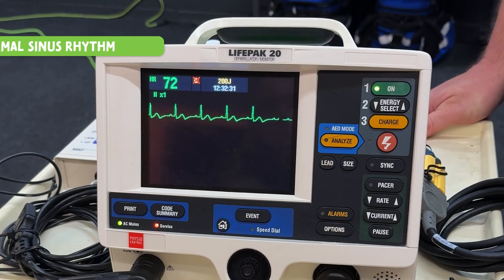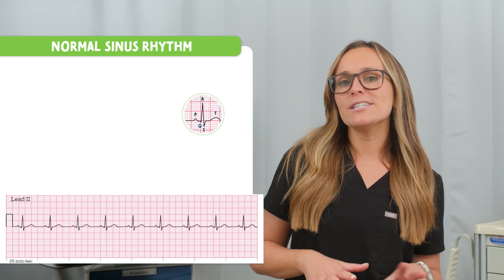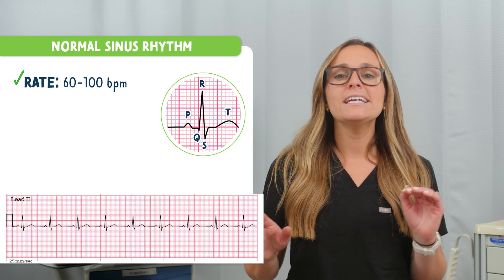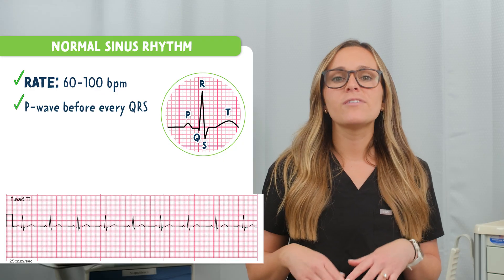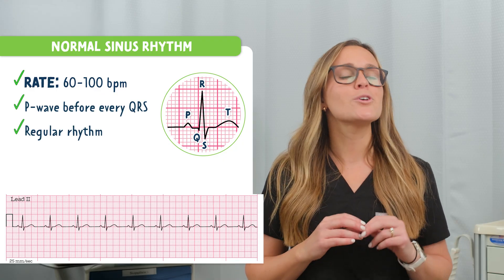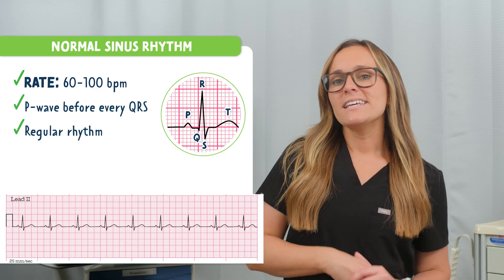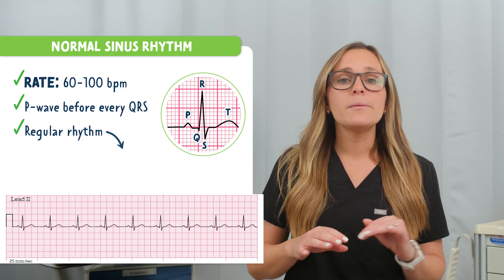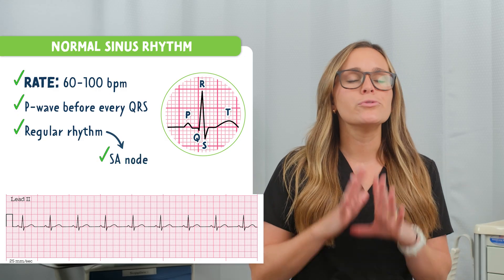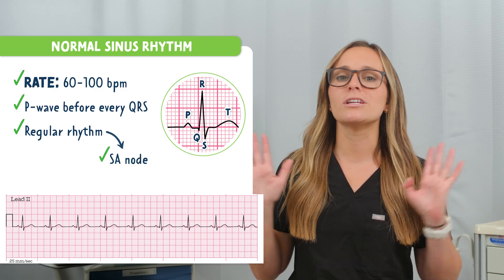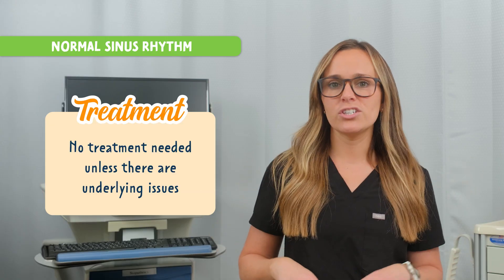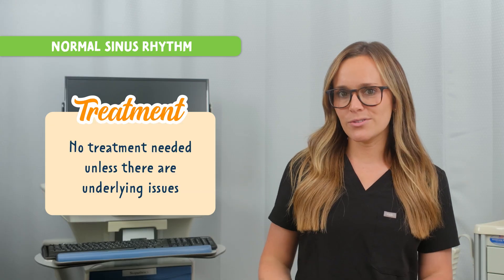This is normal sinus rhythm. The rate is between 60 and 100 beats per minute. Each P wave is followed by a QRS complex, and the rhythm is regular. This means the electrical signal is coming from the SA node and is firing through the heart's normal conduction pathway. No treatment is needed here unless the patient has other underlying issues.